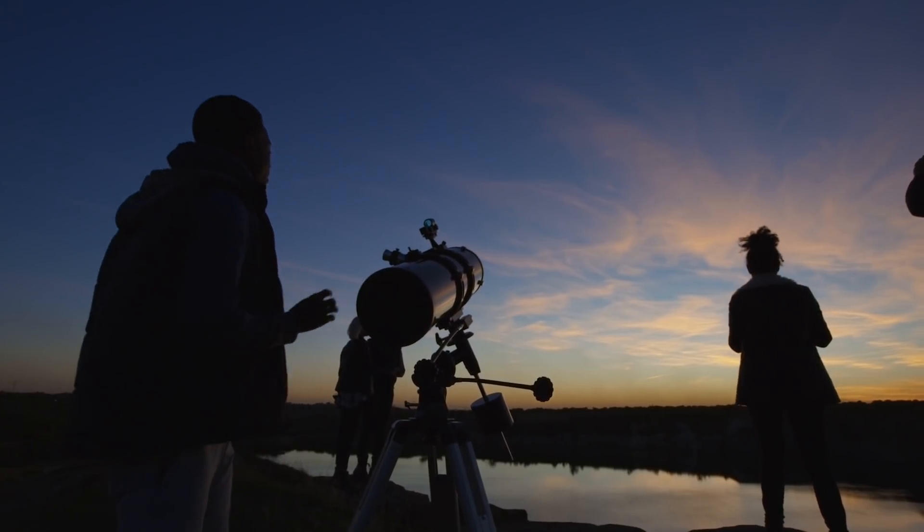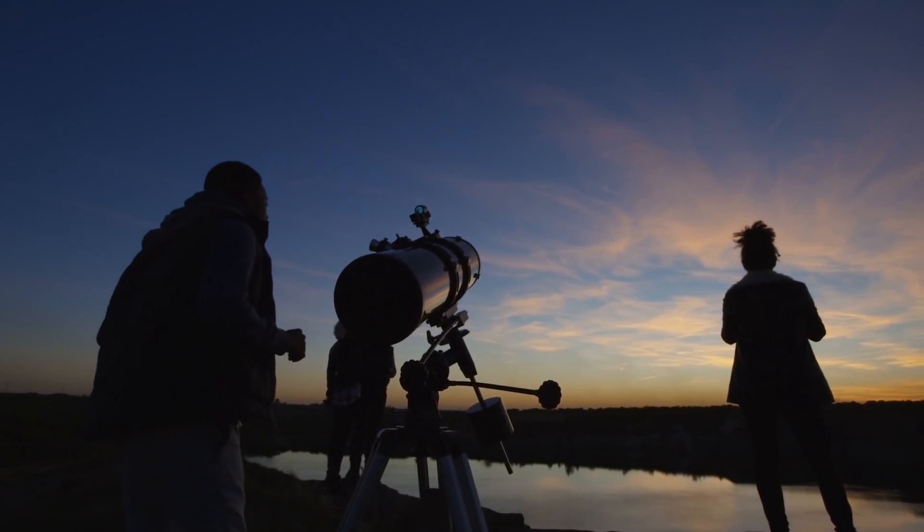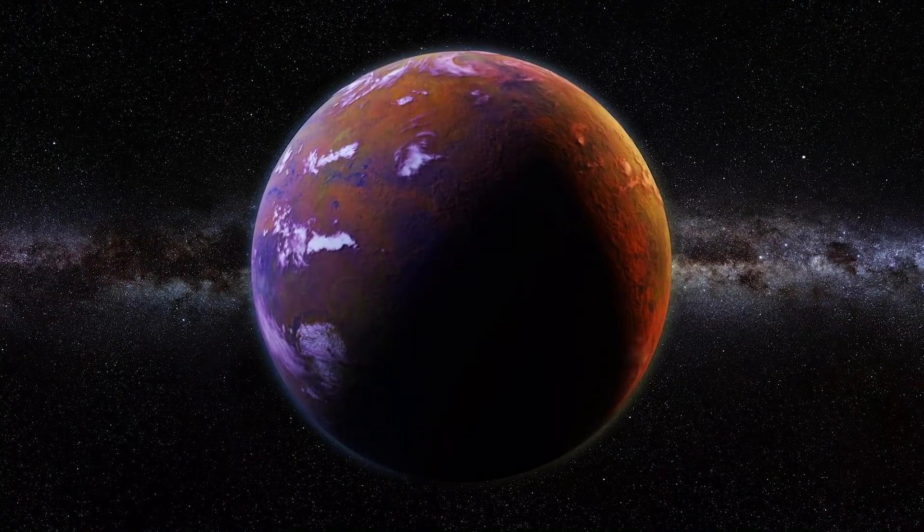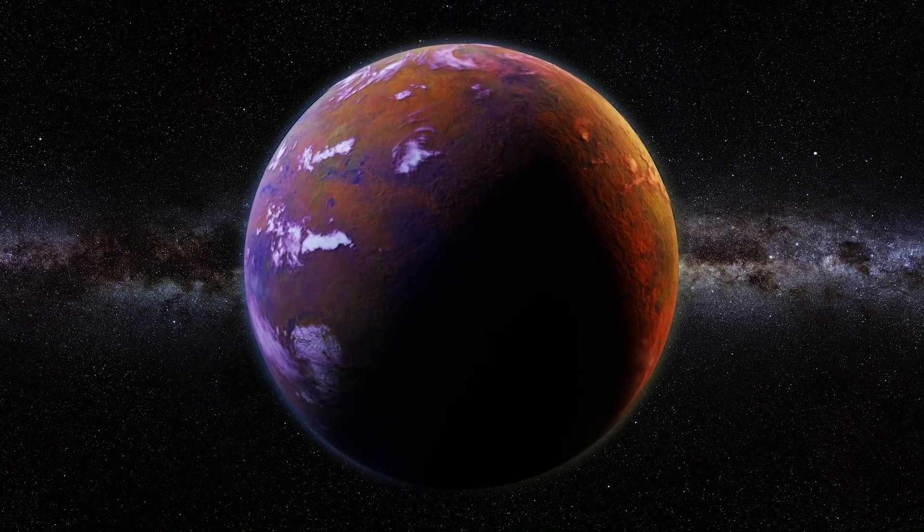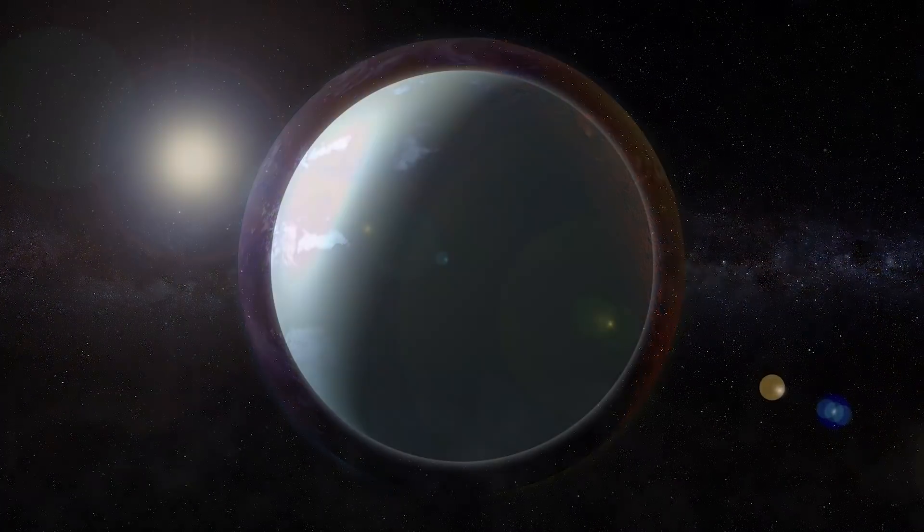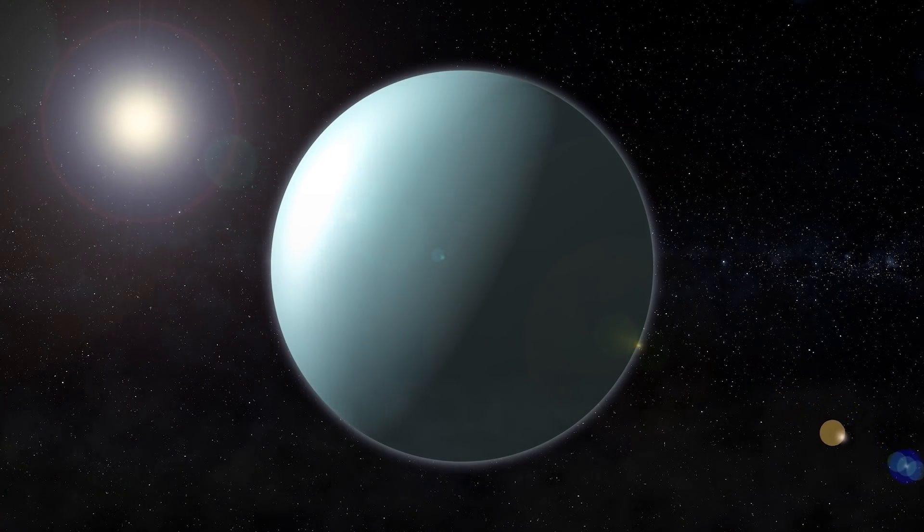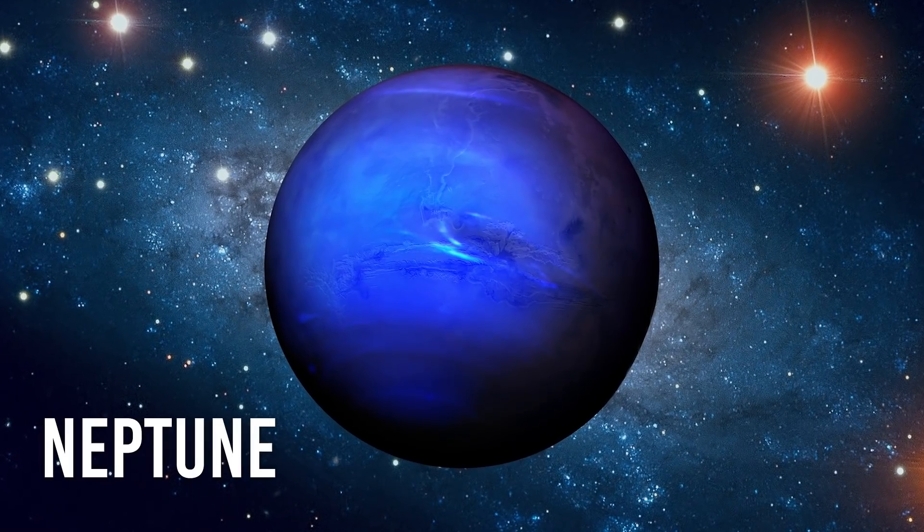Although for many astronomers, the anomalies in the orbits of the outermost gas giant planets of the solar system could be explained without the need to invent any ninth planet, other astronomers supported the idea, since in the past it had been shown that the anomalies of the planet Uranus were due to an eighth planet not yet discovered. This planet ended up being Neptune.